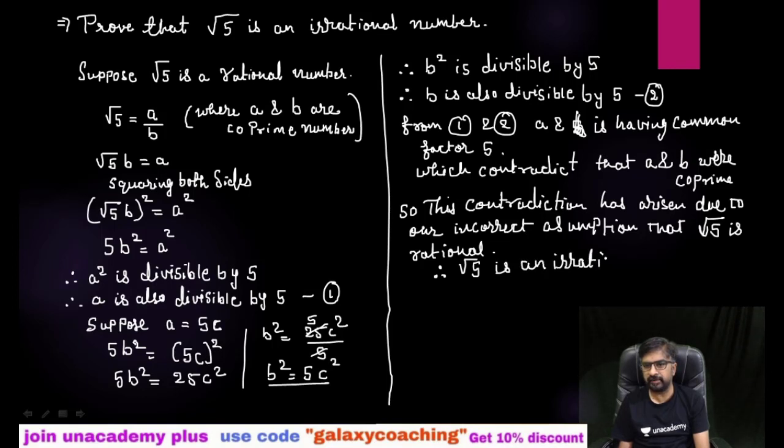This way we can prove any number irrational. You can say root 2, root 3, or root 7. Every term as irrational with this method.